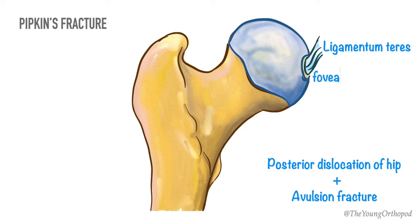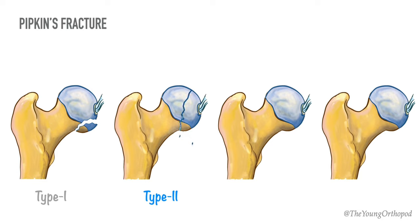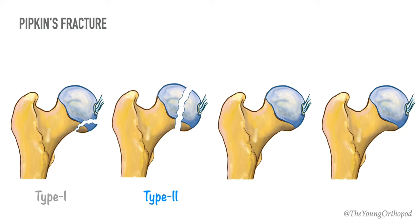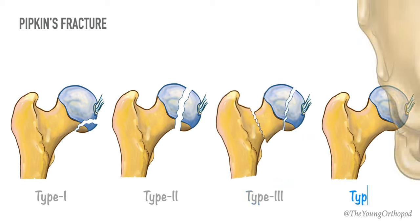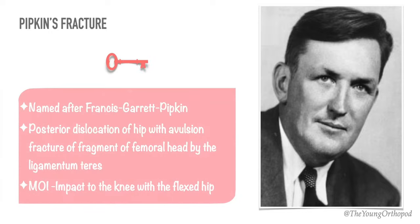There are four types of Pipkin's femoral head fracture. In Type 1, there is hip dislocation with fracture of the femoral head inferior to the fovea capitis femoris. In Type 2, hip dislocation with fracture of the femoral head superior to the fovea capitis femoris. In Type 3, there is a Type 1 or Type 2 injury also associated with fracture of the femoral neck. In Type 4, there is a Type 1 or Type 2 injury also associated with fracture of the acetabular rim. It is named after Francis Garrett Pipkin, who first described it.